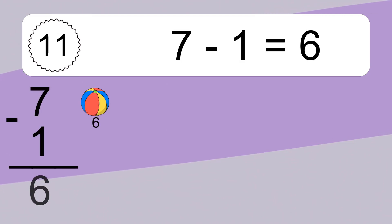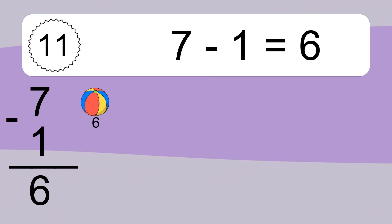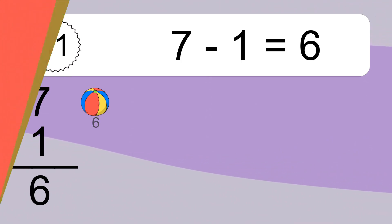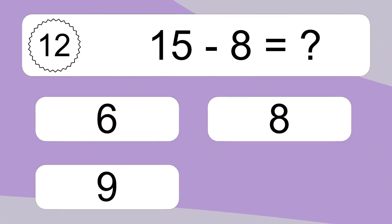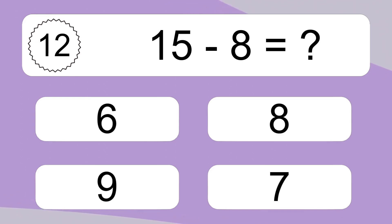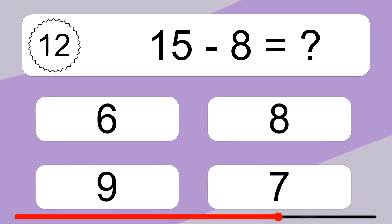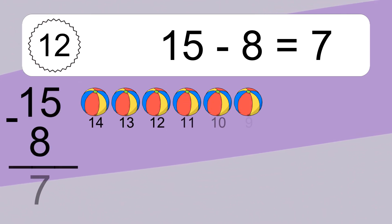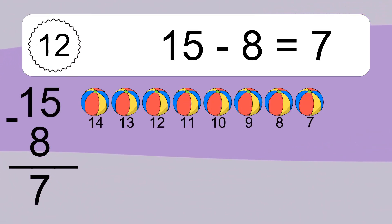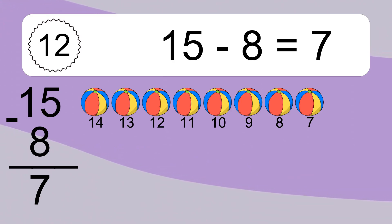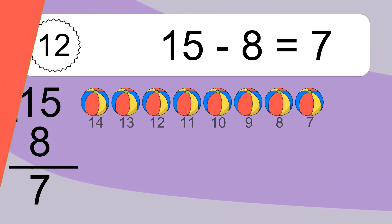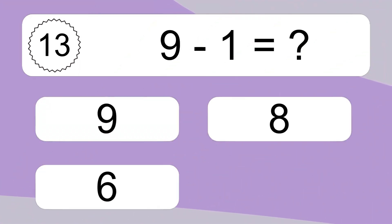12 minus 1 equals what? 7 minus 1 equals 6. Let's count it: 6. 15 minus 8 equals what? 15 minus 8 equals 7. Let's count it: 14, 13, 12, 11, 10, 9, 8, 7.